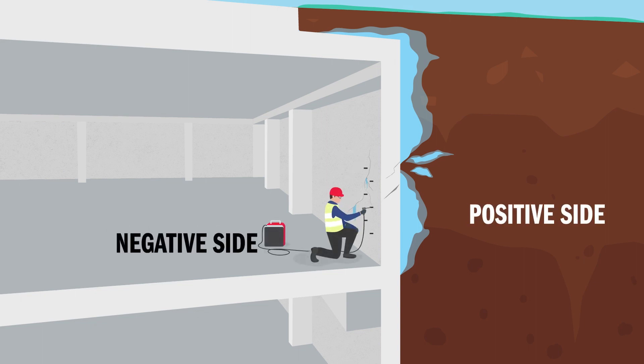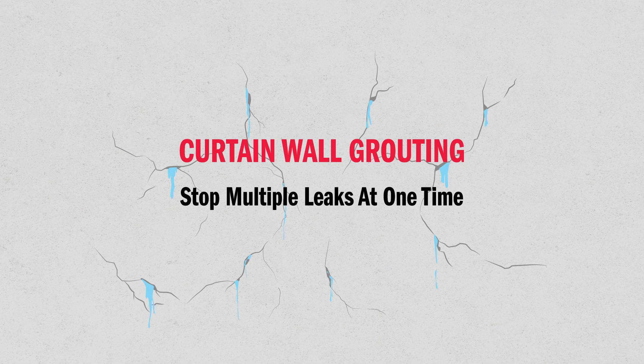Alchatek offers a more permanent solution to fix the leak by injecting one of Alchatek's resins to create a grout curtain on the positive side of the structure. Curtain wall grouting with Alchatek's leak seal polymers allows you to stop multiple leaks in a structure at one time.